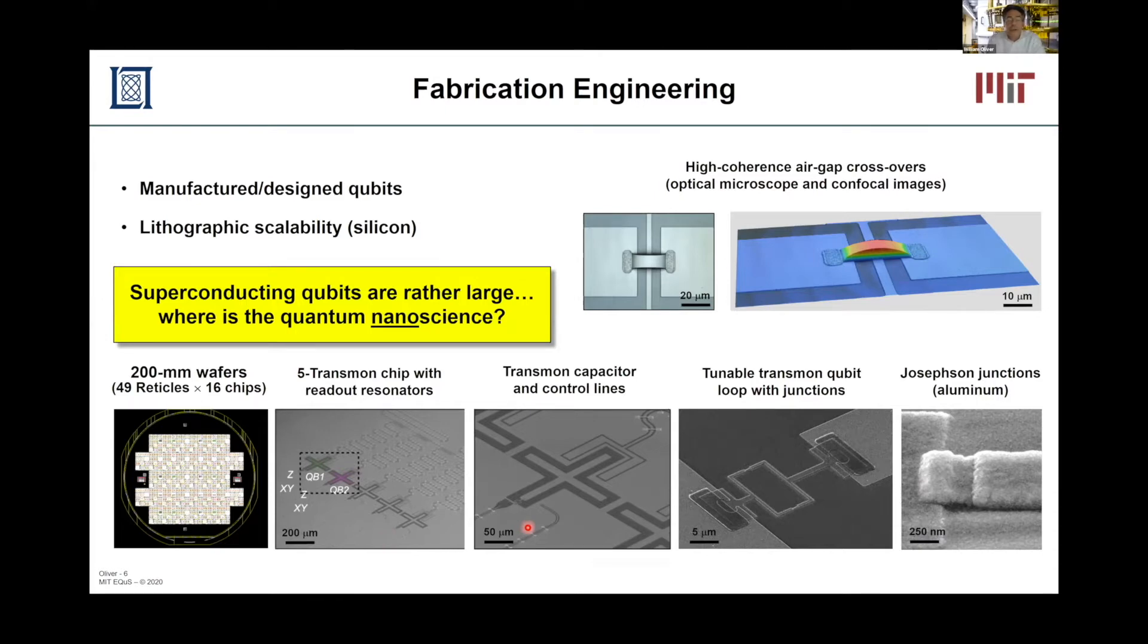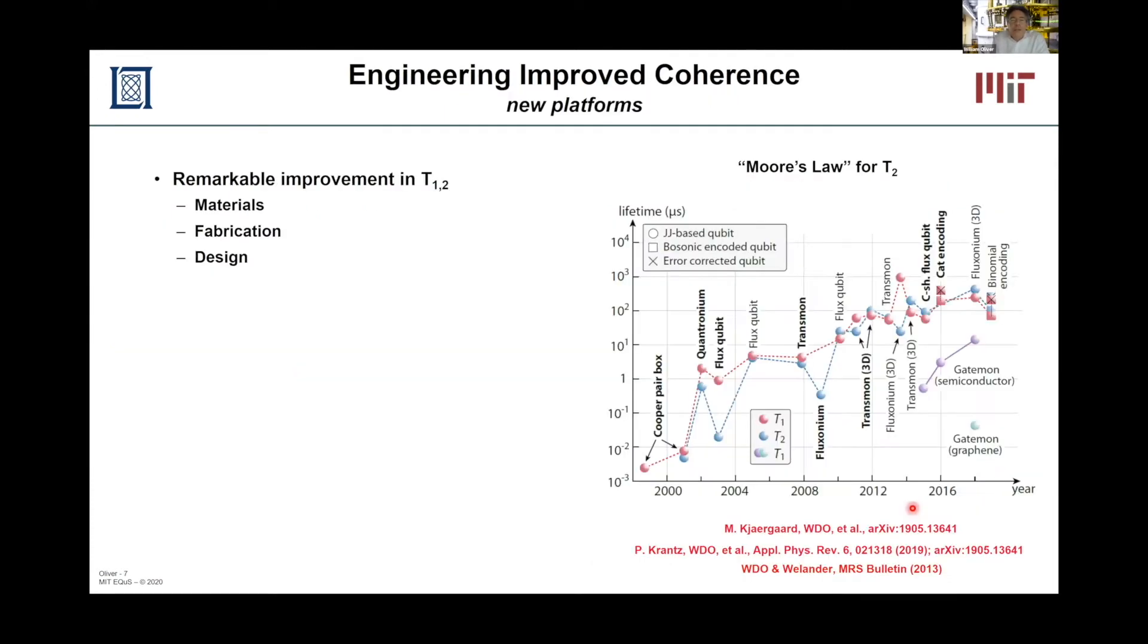This is very much a silicon technology. We use metals that are compatible with silicon processing, such as aluminum or titanium nitride. We fabricate on silicon wafers, shown here as a 200 millimeter wafer with many qubits on it. If we zoom in on one of these smaller chips, you can see five qubits in a row. If we zoom in further, we can actually see the qubit loop and two junctions. And then we zoom in even further and we can see the Josephson junction itself, which now we're down at the few hundred nanometer scale. So if you look at this, you'd say superconducting qubits are rather large. So where is the quantum nanoscience?